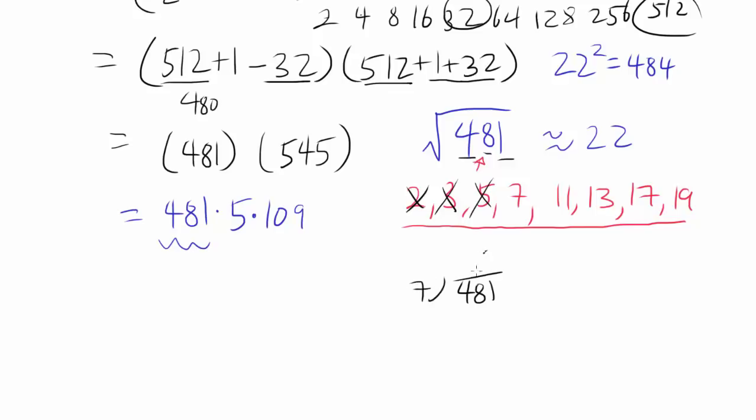Try dividing by 7. 481 divided by 7. 7 times 6 is 42, 61, 7 times 8 is 56, remainder of 5, nope.